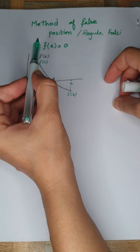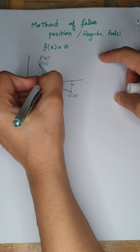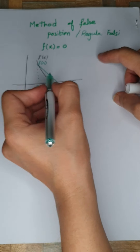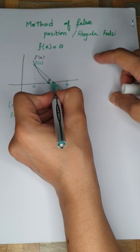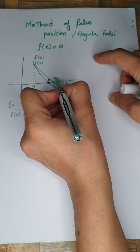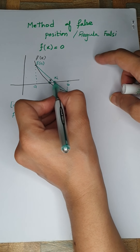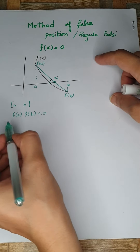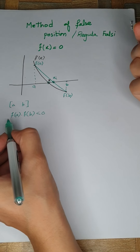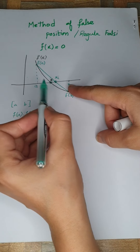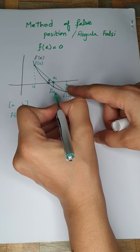The method of false position approximates the root with a chord. We draw a straight line joining the two points f(a) and f(b). The first approximation of the root, x_i, is the point where this chord cuts the x-axis. The next iteration is achieved by updating the interval using the same criteria used in the bisection method.